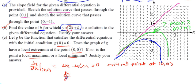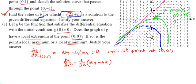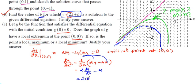First, confirm there is a critical number: dy/dx at (0,0). Substituting x=0, y=0 gives 2(0) - 4(0) = 0, confirming a critical point at (0,0). Now find the second derivative: d²y/dx² = d/dx(2y - 4x) = 2(dy/dx) - 4. Evaluate at (0,0): since dy/dx = 0 there, this gives 2(0) - 4 = -4, which is less than 0.